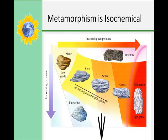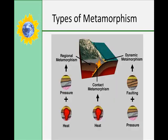Metamorphism is essentially an isochemical process, which means that the bulk chemical composition of a rock body is more or less unchanged from the protolith, or original rock. But the minerals may be largely recrystallized into a new mineral assemblage.